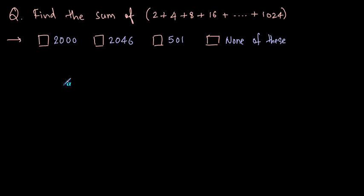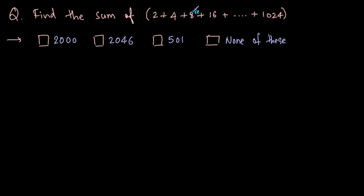Let us solve this example: find the sum of 2 plus 4 plus 8 plus 16 plus so on till 1024. This series is in a geometric progression because it is in increasing order and there is no common difference but there is a common ratio. Dividing 4 by 2 gives ratio 2; ratio of 8 and 4 is again 2; ratio of 16 and 8 is again 2. So this is a geometric progression.